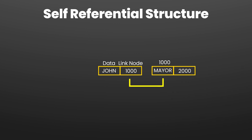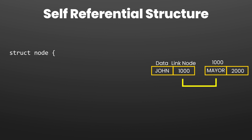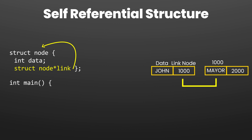To create a node using the structure, write a struct node with two fields: an integer data, and a self-referencing pointer struct node star link. For a linked list we also need a pointer variable pointing to the very first node, so in the main function we create a pointer variable of data type node.